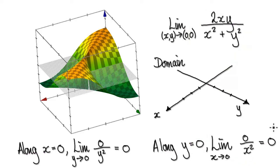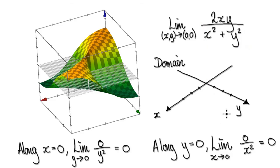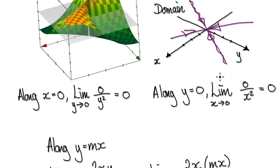But then that's not sufficient enough. For this example, if you approach the origin in a straight-line manner, it will lead you to a different output, a different z value. So let's consider approaching the origin in a straight-line manner. In a straight-line manner would be something like this. If you approach the origin in a straight-line manner, this is a trick that we would use.